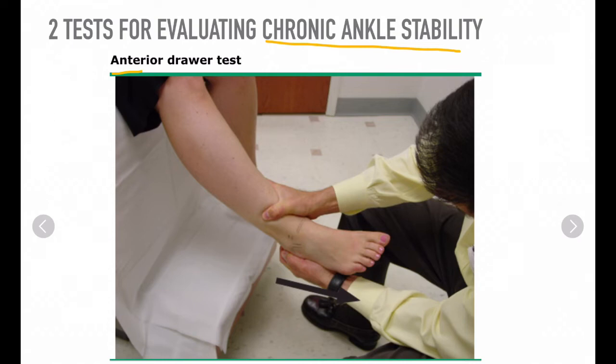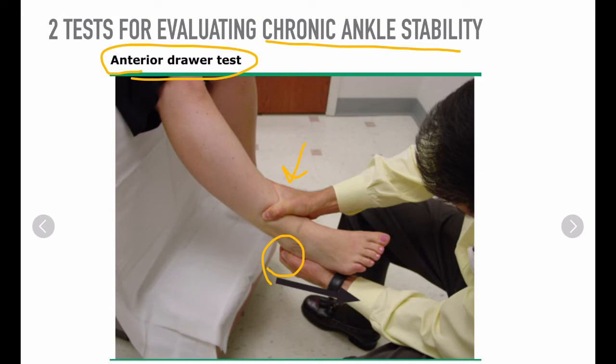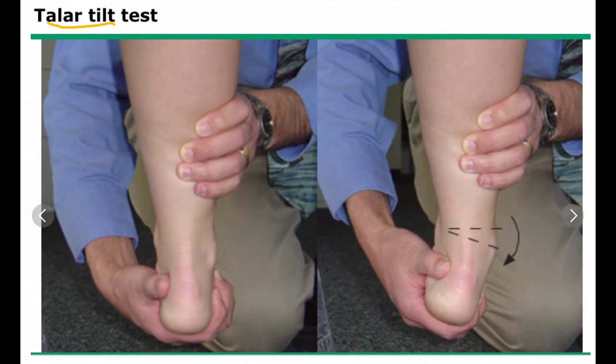Tests for evaluating chronic ankle instability: the anterior drawer test is performed with the patient's foot in neutral position, slight plantar flexion, and inversion. The examiner stabilizes the lower leg with one hand and grasps the heel with the other. An anterior force is applied to the heel while holding the distal anterior leg fixed. Excessive anterior displacement indicates a positive test.